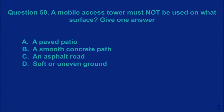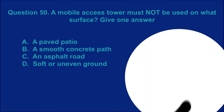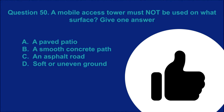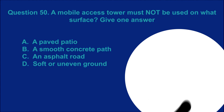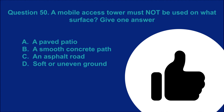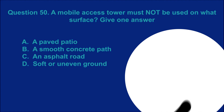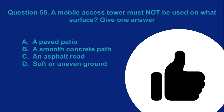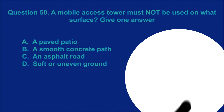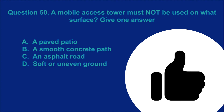Question 50: A mobile access tower must not be used on what surface? Give one answer. A: a paved patio. B: a smooth concrete path. C: an asphalt road. D: soft or uneven ground. The correct answer is D.